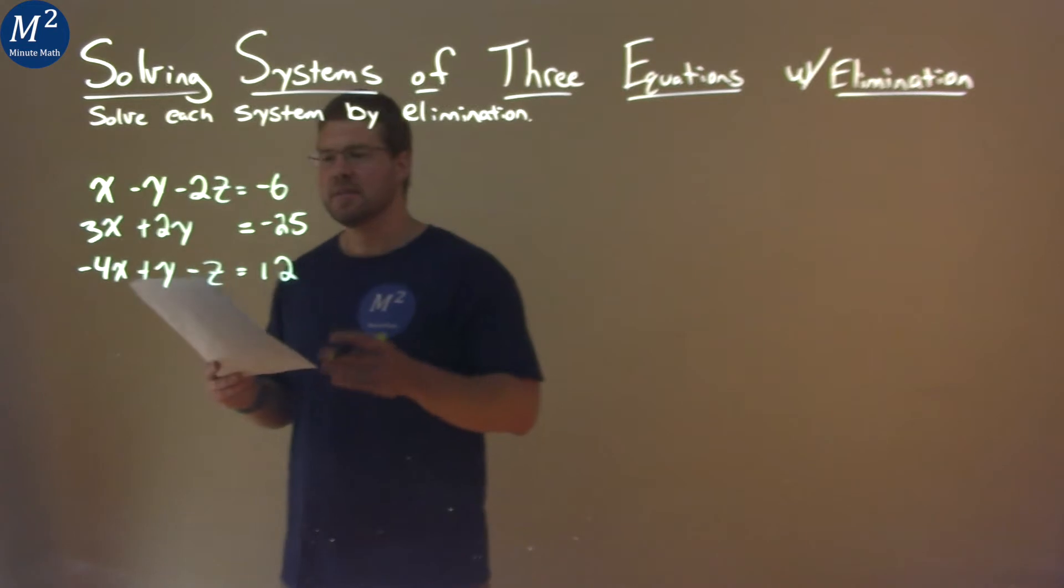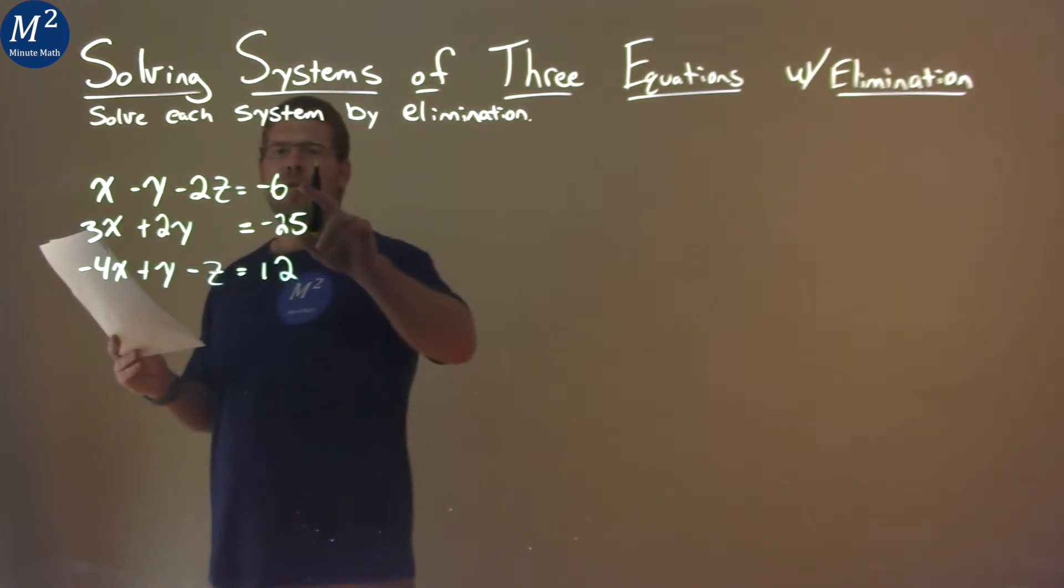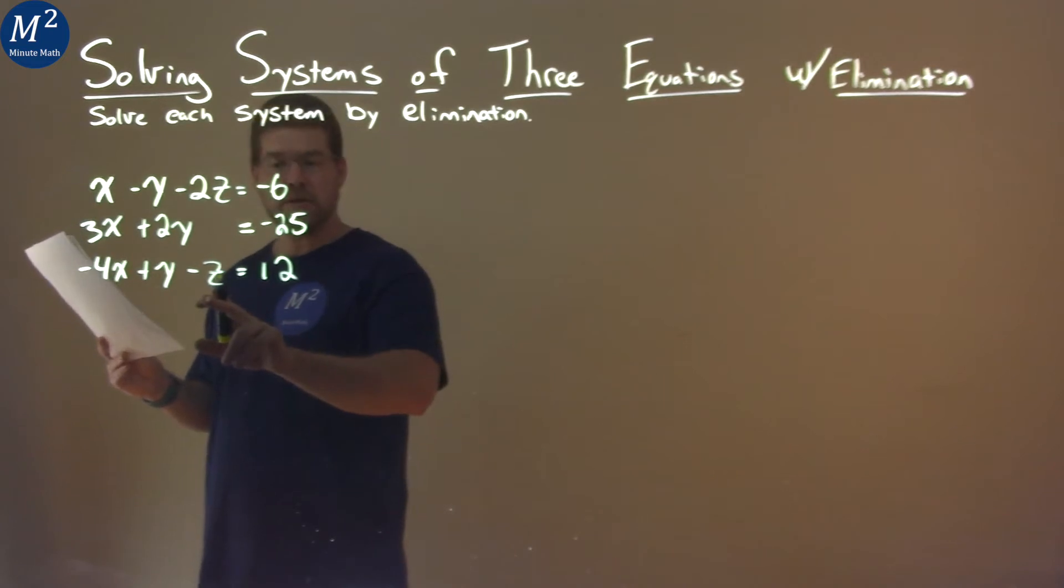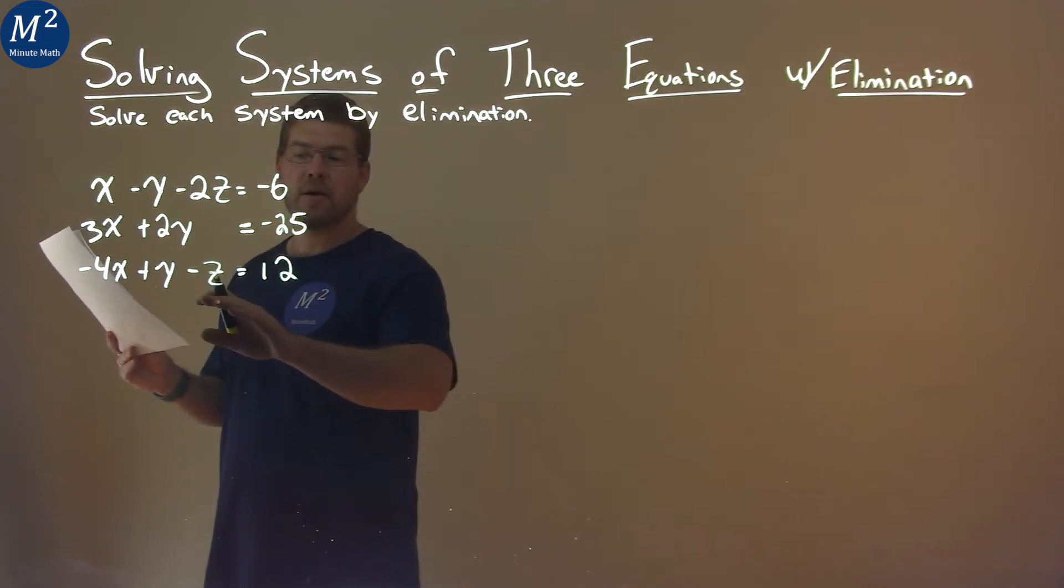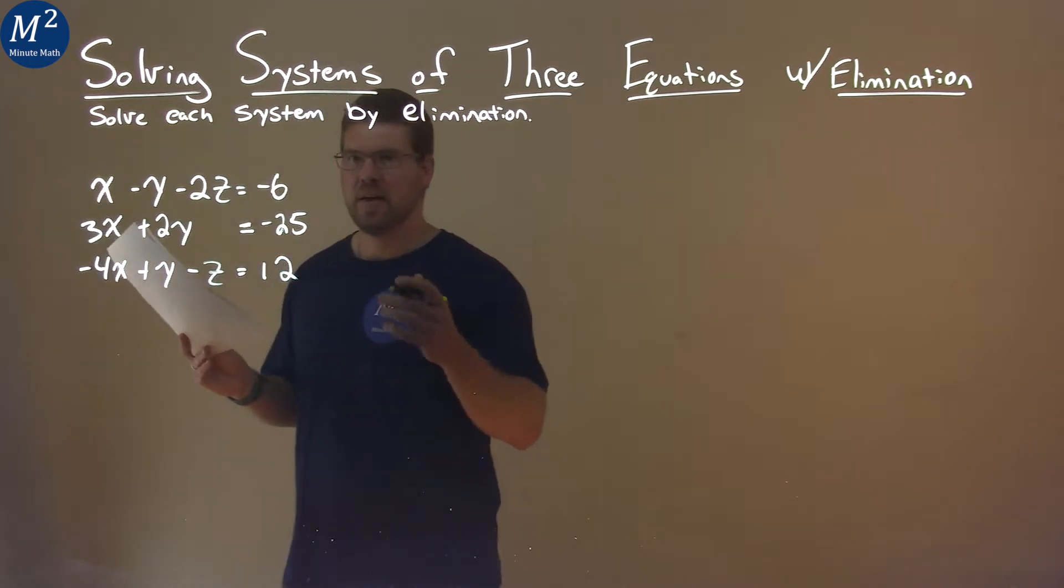I'm looking at here and trying to see what I can eliminate. The first equation has a negative 2z, and the third equation has a 1z. So if I multiply the second equation by 2, I can get something that can eliminate the z values.